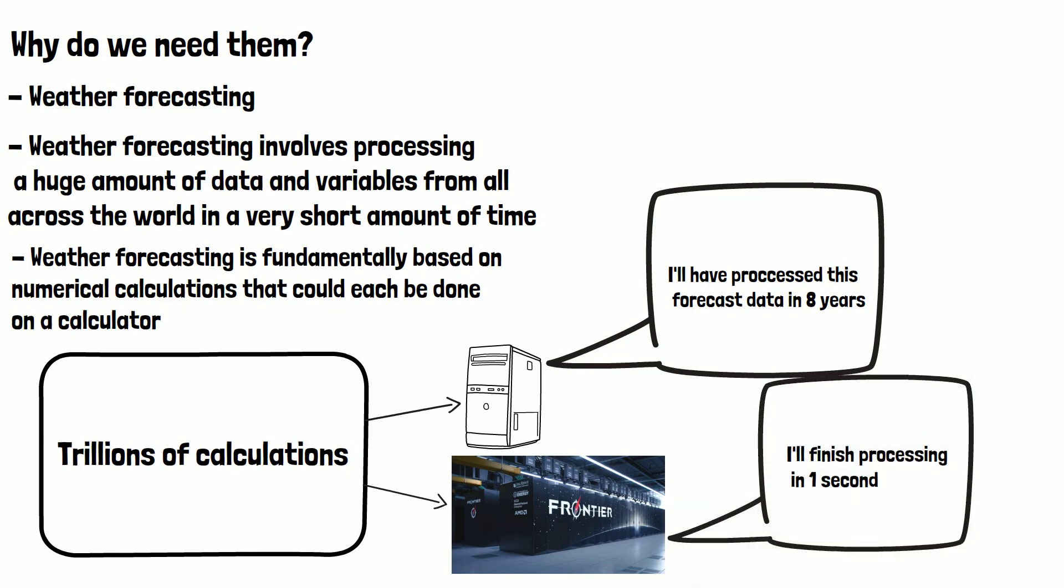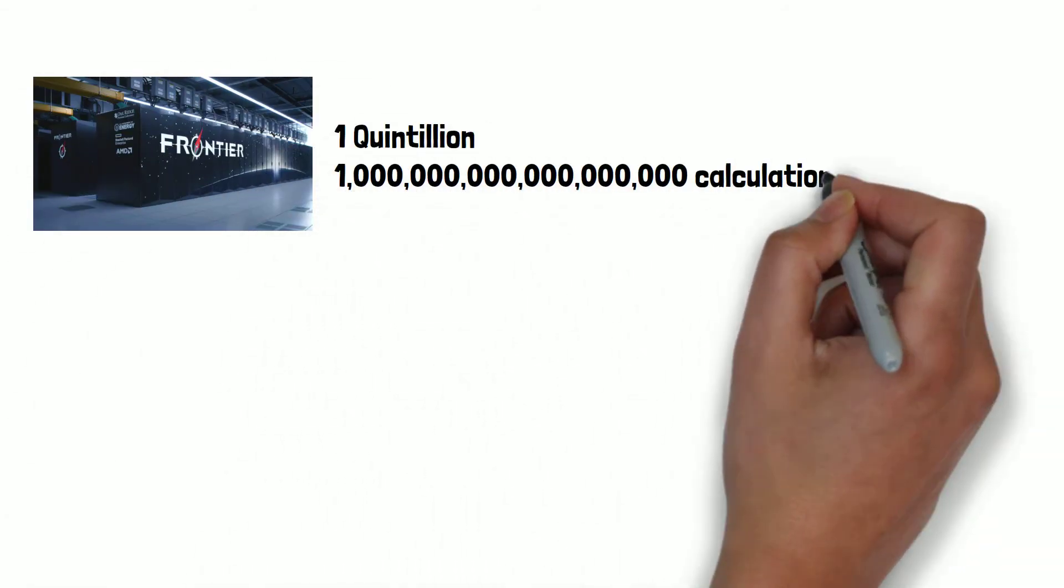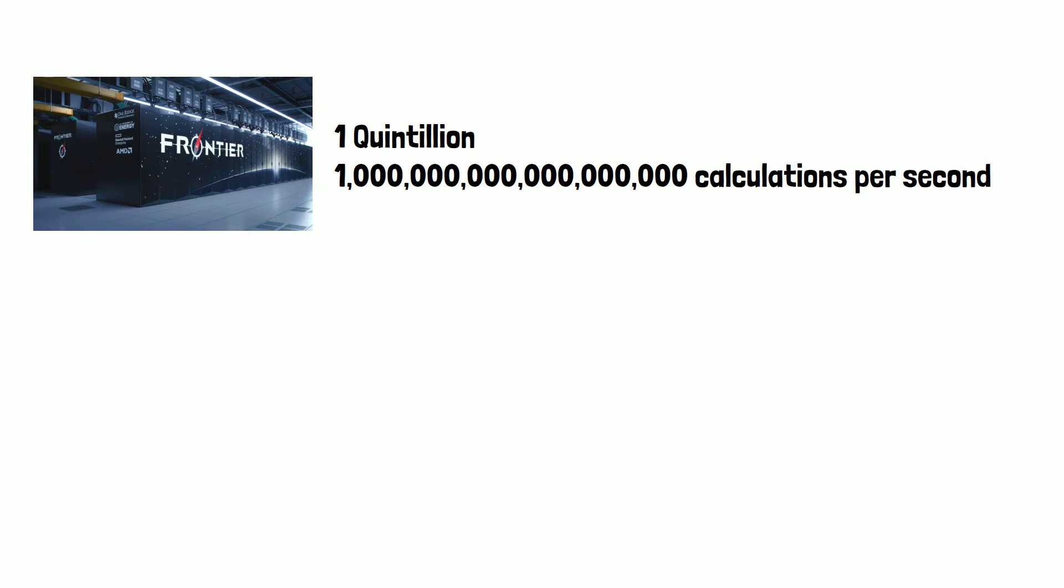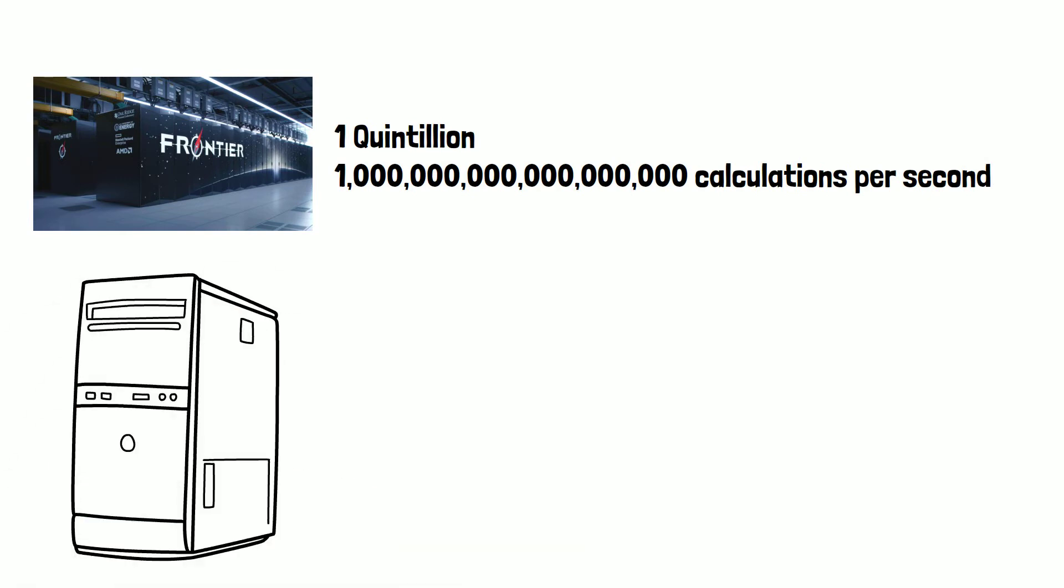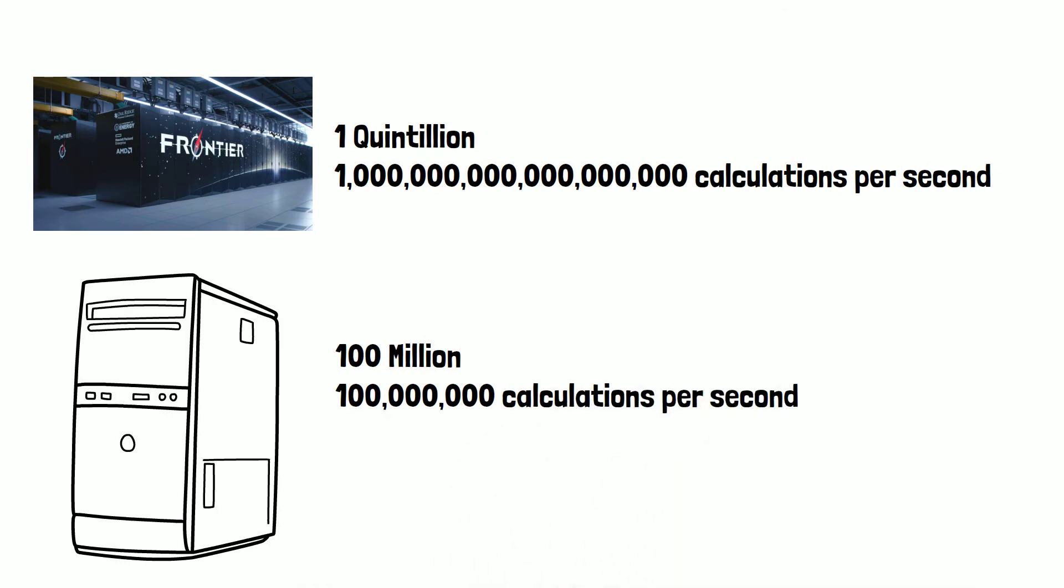The Frontier supercomputer mentioned is capable of doing one quintillion calculations per second, whereas an average desktop PC from 2022 can do roughly 100 million, meaning supercomputers are the only way of processing the data needed for weather reports in a timely manner.